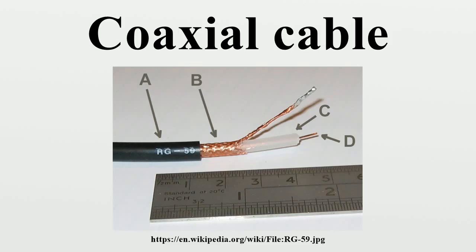The ends of coaxial cables usually terminate with connectors. Coaxial connectors are designed to maintain a coaxial form across the connection and have the same impedance as the attached cable. Connectors are usually plated with high-conductivity metals such as silver or tarnish-resistant gold. Due to the skin effect, the RF signal is only carried by the plating at higher frequencies and does not penetrate to the connector body. Silver, however, tarnishes quickly and the silver sulfide that is produced is poorly conductive, degrading connector performance, making silver a poor choice for this application.